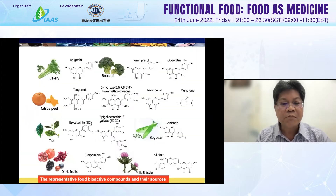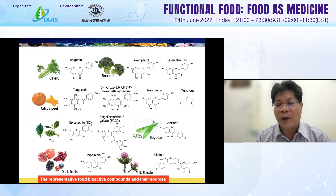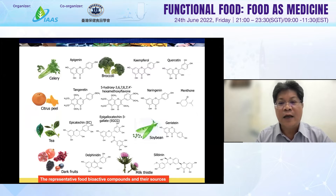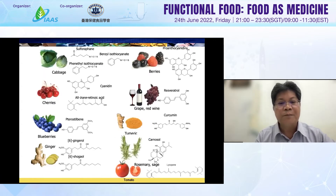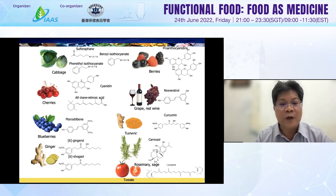This slide shows the bioactive compounds and their layer sources. Apigenin is a bioactive compound. In the six-drop herb, bioactive compounds include tangeretin and nobiletin. As you can see, tea includes EC and EGCG. From different kinds of food or herbal medicine, we can find bioactive compounds in plants or plant-based vegetables. We use different kinds of resources, including pterostilbene from blueberry.